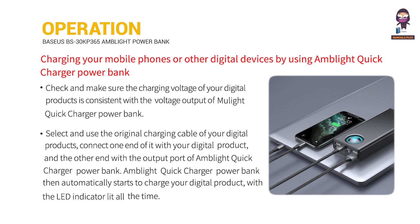Charging your mobile phones or other digital devices using the Amblite Quick Charger Power Bank: Check and make sure the charging voltage of your digital products is consistent with the voltage output of the Amblite Quick Charger Power Bank. Select and use the original charging cable of your digital products, connect one end with your digital product, and the other end with the output port of the Amblite Quick Charger Power Bank.